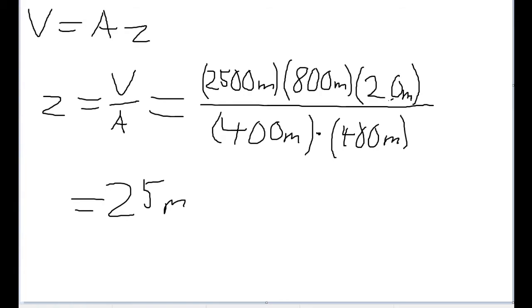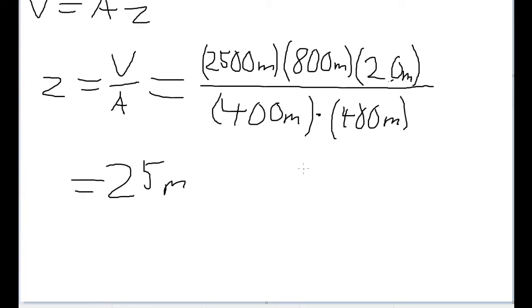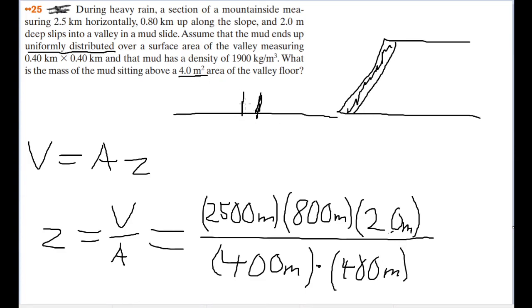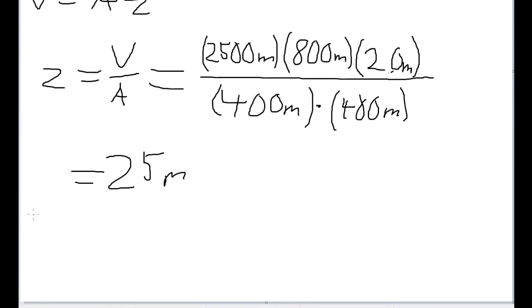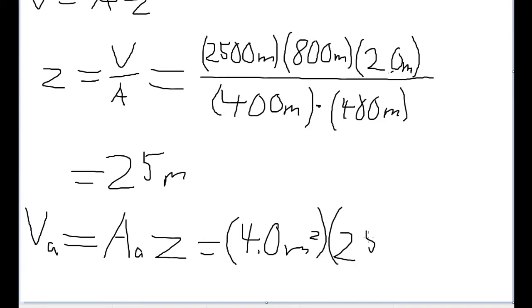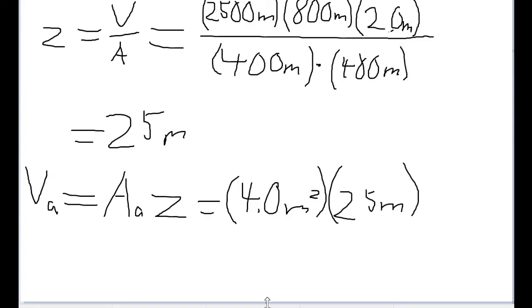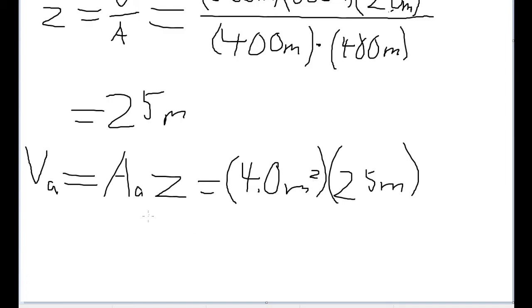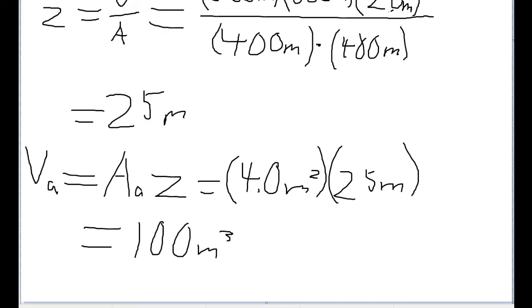So now we have roughly the thickness of the entire pile of mud in the valley. So now we can use this to get the volume of just the small section we're trying to solve for. To distinguish it from the V I used for the total volume up here, I'll call it V sub A for the volume of the area. So the volume of the area is going to be equal to the smaller area, or A sub A, times the thickness we calculated above, which is going to be 4.0 meters squared times 25 meters. Doing this calculation gets us a volume of the section of 100 cubic meters.